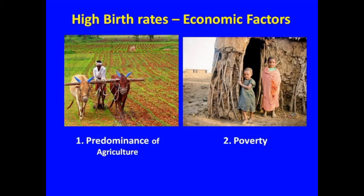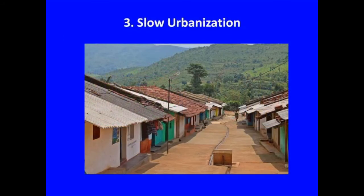Let us discuss these in detail. First, predominance of agriculture: in agrarian societies, children have never been considered an economic burden, thus we find bigger families in agrarian societies. Next, poverty: poor people prefer large families as they consider children as assets, feeling that more children means more earnings — so poverty is both the cause and consequence of high birth rate. Third, slow urbanization: census data reveals that fertility rate is lower in cities than in villages because of high cost of living and housing problems. As urbanization has been very slow in India, the birth rate remains high.